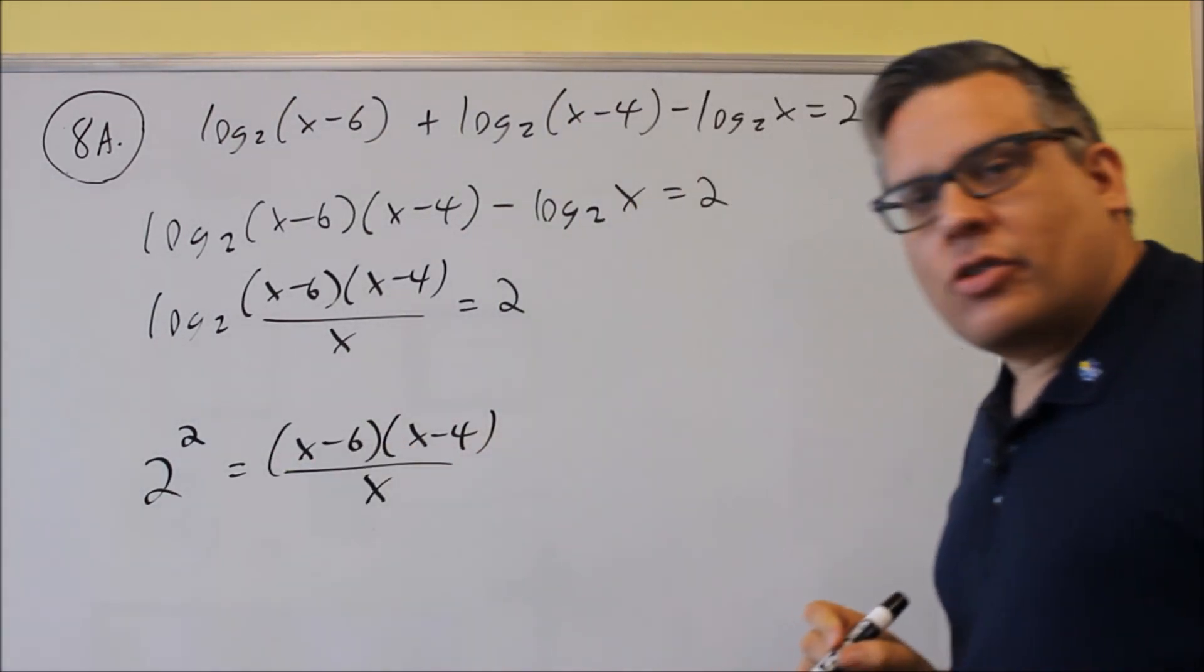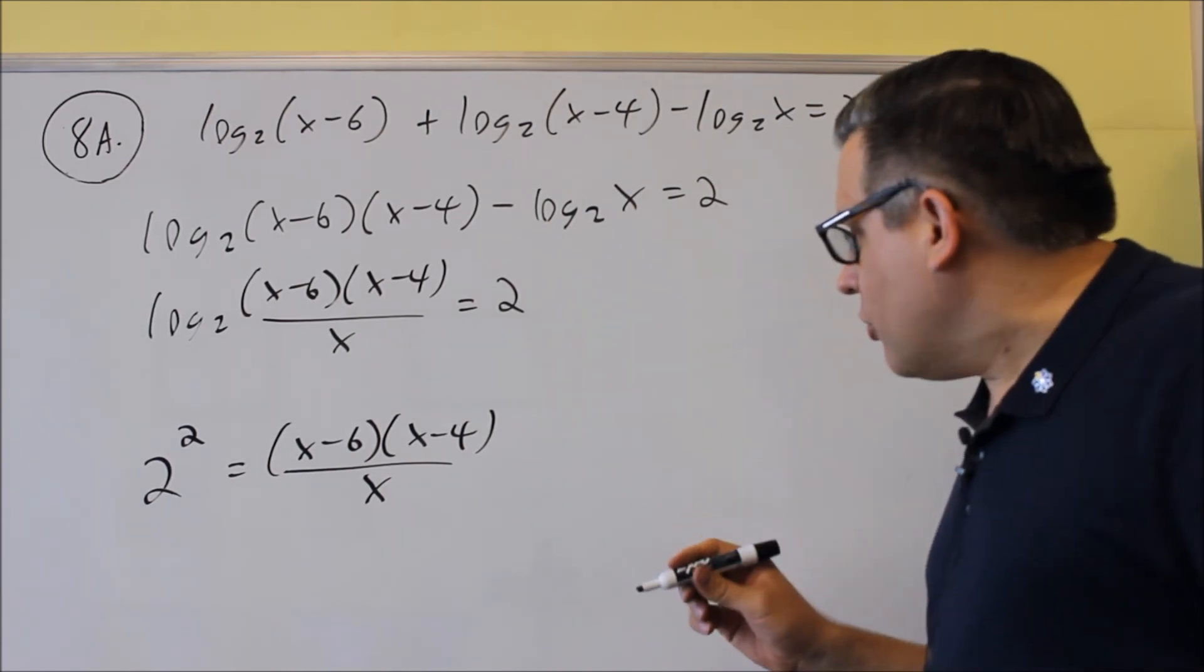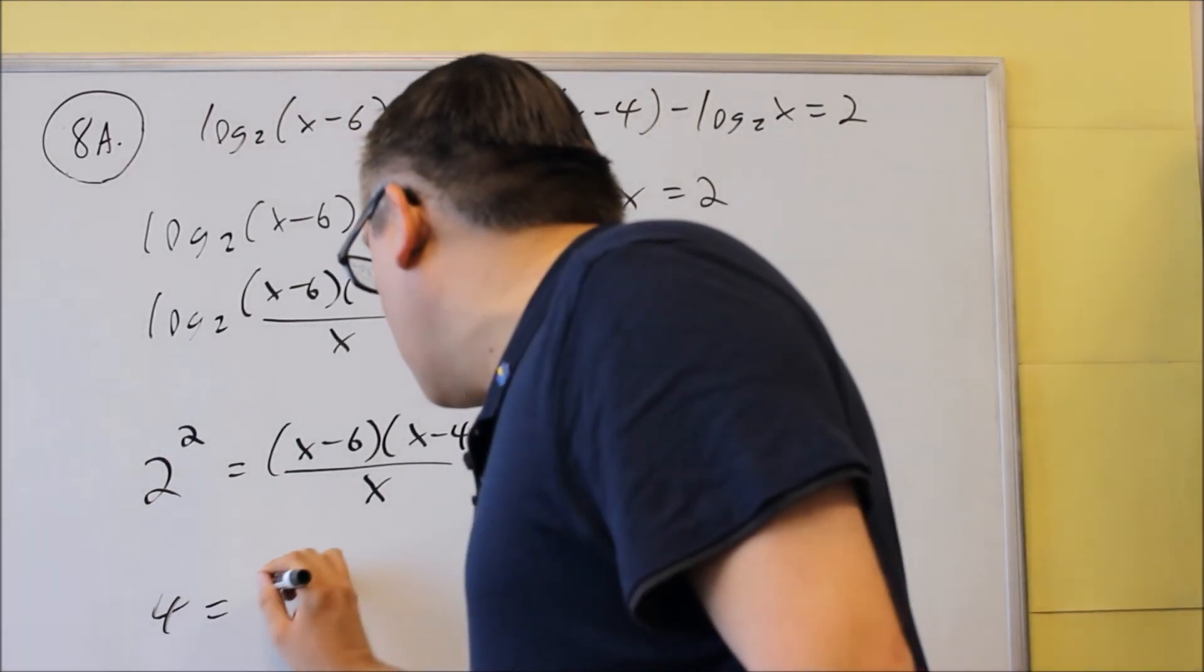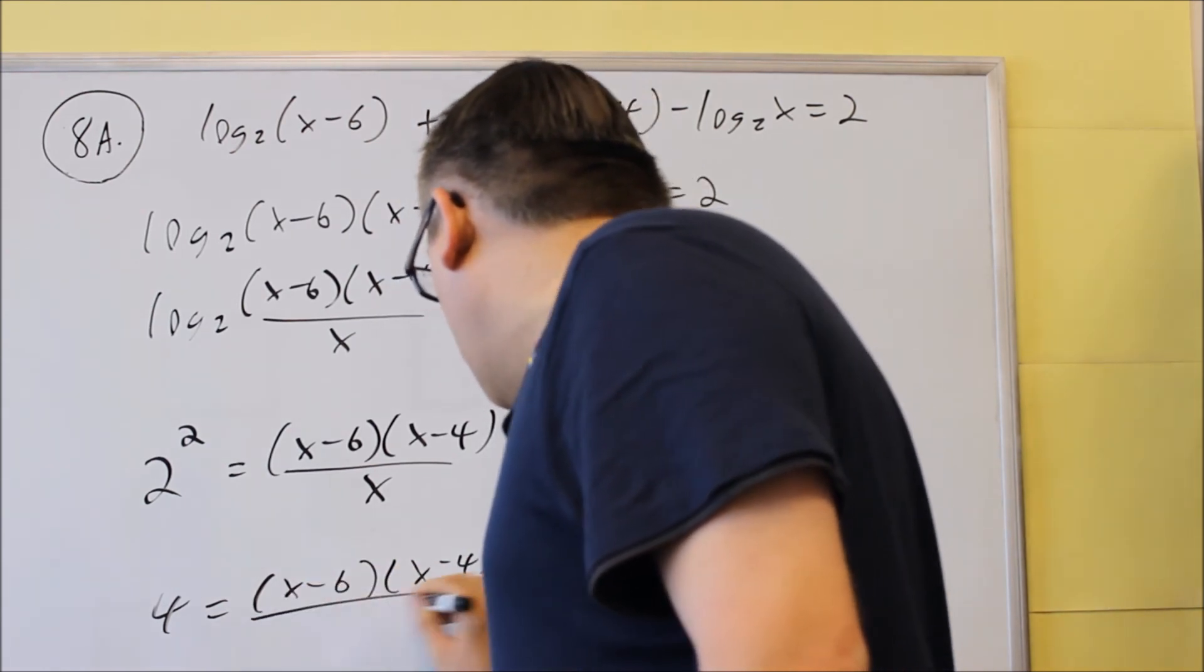So the two squared, the two squared is equal to four, and so we'll do that next. So we're going to do four equals x minus six, x minus four, all over x.